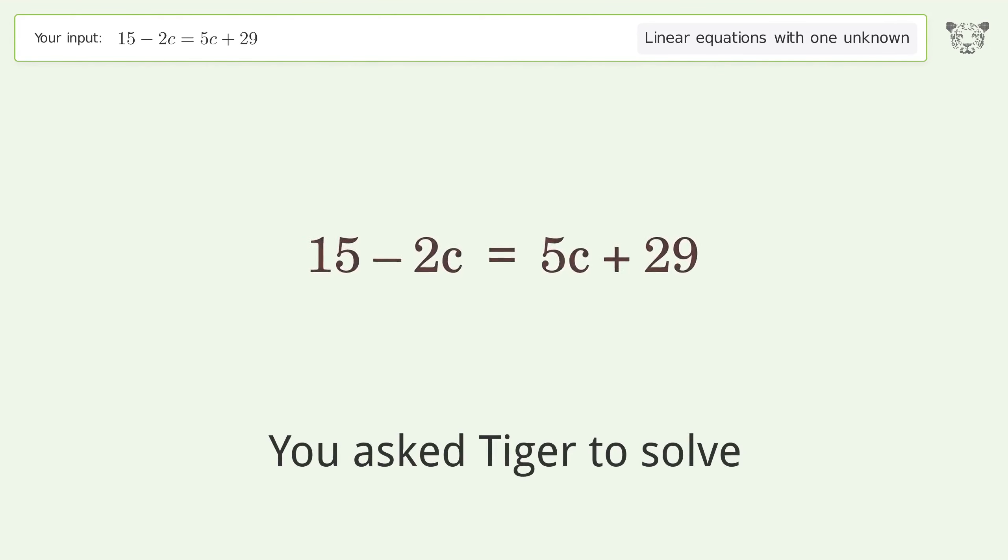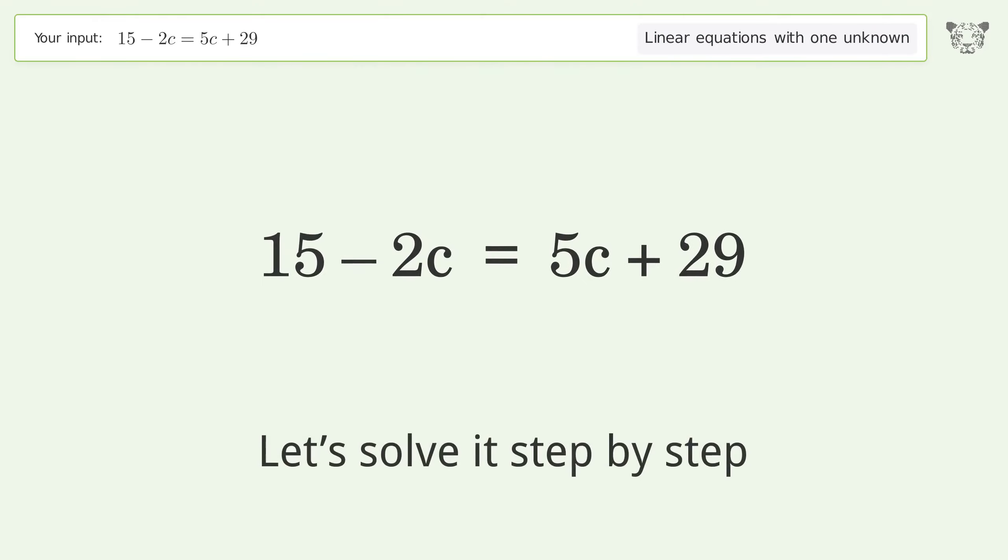You asked Tiger to solve. This deals with linear equations with one unknown. The final result is c equals negative 2. Let's solve it step by step.